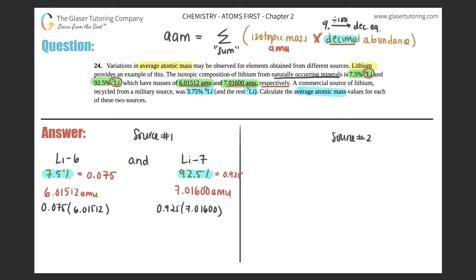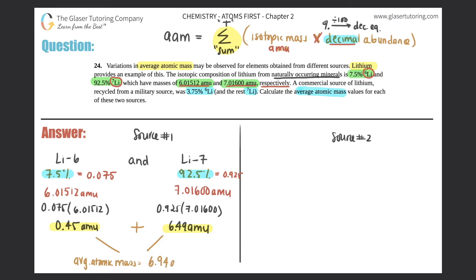Watching sig figs here: 0.075 times 6.01512 needs two sig figs, giving us 0.45 AMU. Then 0.925 times 7.01600 needs three sig figs, giving 6.49 AMU. Now we sum them: 0.45 AMU plus 6.49 AMU. The average atomic mass for source one — from naturally occurring minerals — is 6.94 AMU.